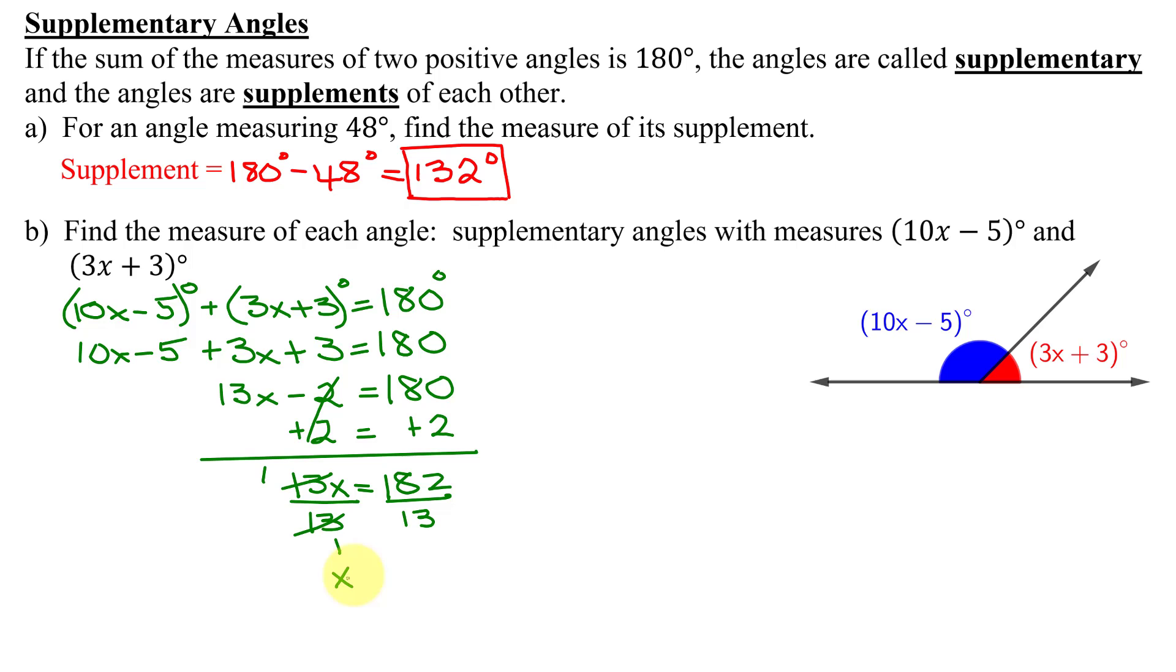But be careful, we're not done. All we've done is found x. We need to find the measure of each angle. So my first angle was 10x - 5. I need to evaluate it when x = 14. So I have 10(14) - 5 = 140 - 5 = 135. And don't forget, my answer is in degrees.